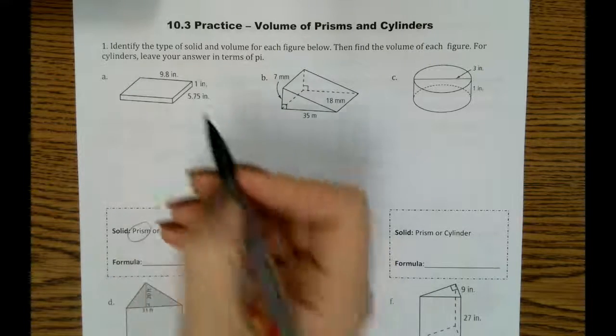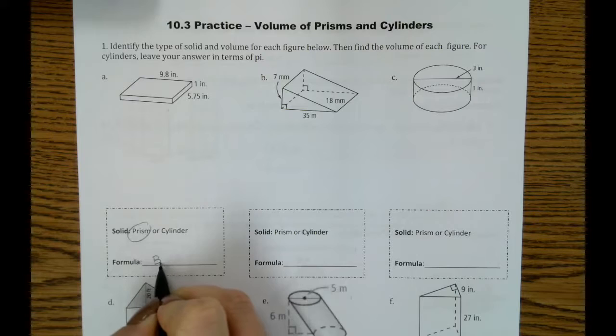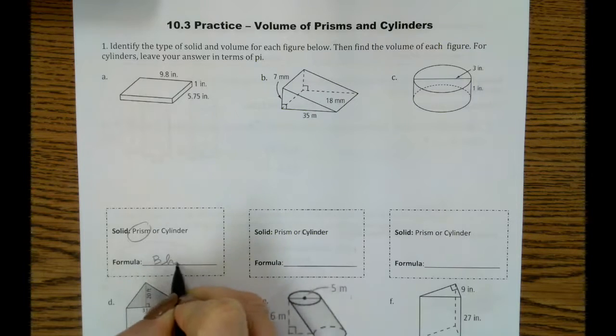In this case, this is a prism, and it's a rectangular prism. Our formula is the area of the base B times the height.